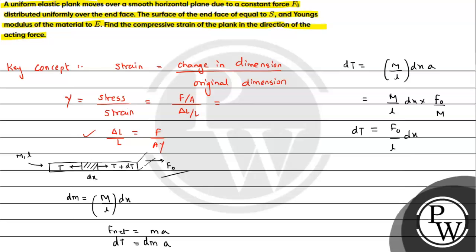Now we can say this dx element is at distance x from the free end. So if we integrate dt from the value 0 to T, this equals the integration of F0 by L into dx, and this value will be from 0 to x. Since we are interested in calculating the value of this tension T or internal force, we get T equals F0 x upon L.